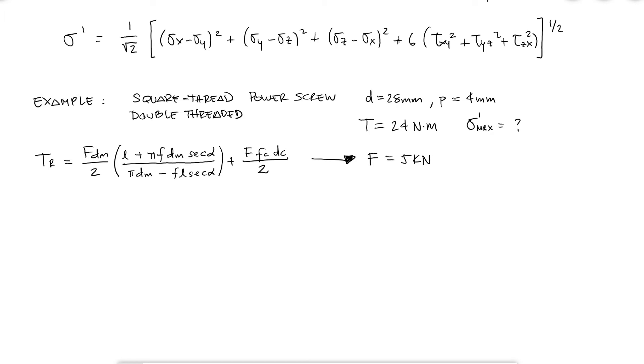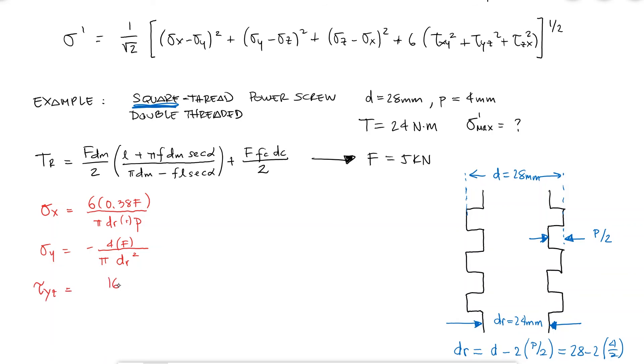I know that to estimate the von Mises stress, I will need to use all four expressions that we derived today, and they at the same time depend on the root diameter, which I was not given. From a simple drawing of the screw, I would find that the root diameter is 24 millimeters. With that information, and the expressions we derived today, in terms of the force, torque, root diameter, and pitch, I would find that the values for sigma x, sigma y, tau yz, and tau zx are...